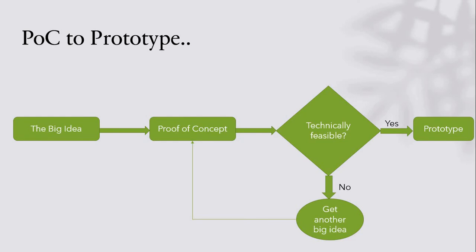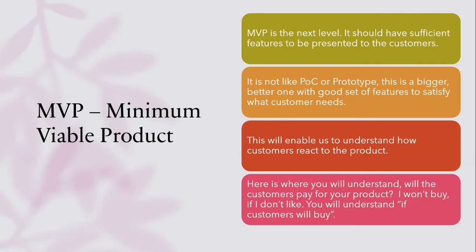How does the journey go from POC to prototype? I have a big idea. I build the proof of concept. I now understand if it is technically viable and feasible or not. If it is feasible, I go ahead and build the prototype. If it is not feasible, I need to revamp and work on polishing the previous big idea. So the flow is: big idea → proof of concept → technical feasibility understanding → if yes, go build the prototype.